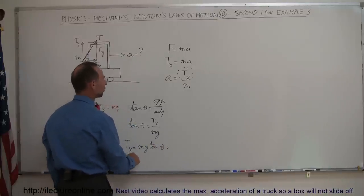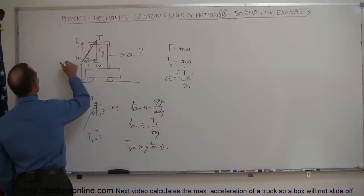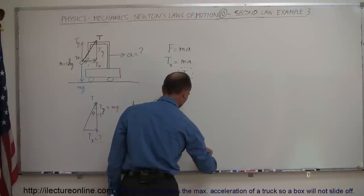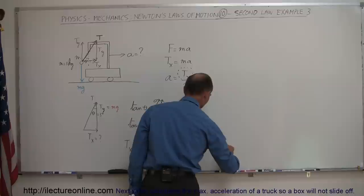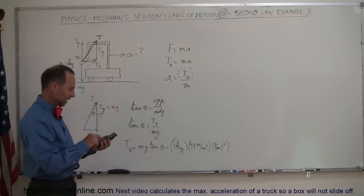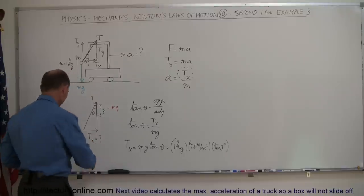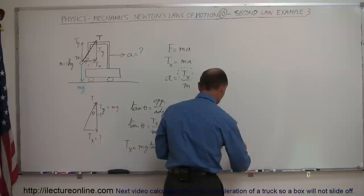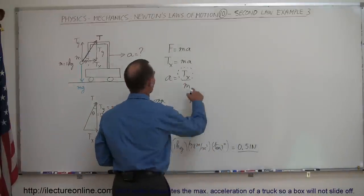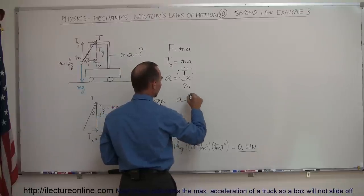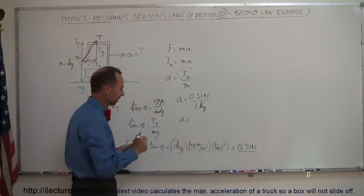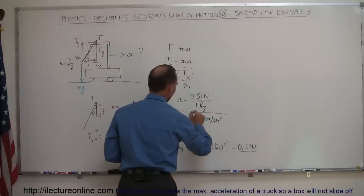Solving for T sub X by multiplying both sides by MG: T sub X equals MG times the tangent of theta. Plugging in numbers — the mass is 1 kilogram, g is 9.8 meters per second squared, and theta is 3 degrees — we get T sub X equals 1 kg times 9.8 m/s² times tangent of 3 degrees, which equals 0.51 newtons. Therefore, the acceleration A equals 0.51 newtons divided by 1 kilogram, giving us 0.51 meters per second squared.